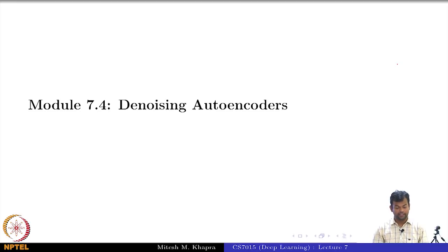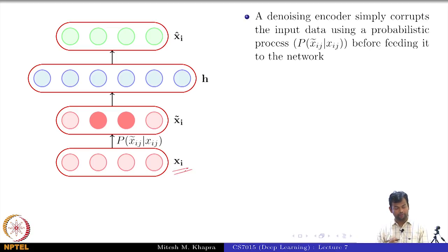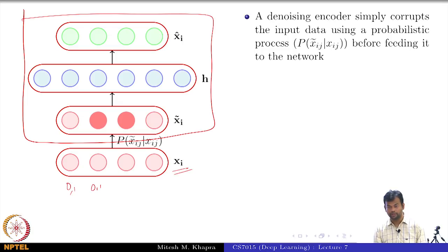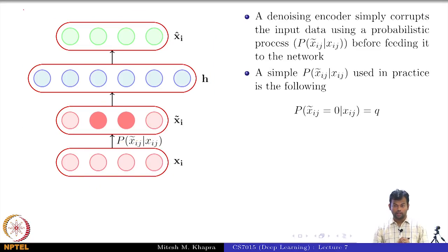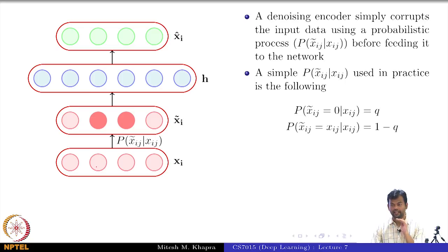We will now discuss denoising autoencoders. The idea is simple: you have your original input x_i. For now, consider the case where x_i values are binary inputs, so each can be 0 or 1. Before feeding this input to the autoencoder, I apply a corruption: with probability q, I set x_ij to 0, and with probability 1 minus q, I keep it as is. So with some probability q I am corrupting the data, otherwise retaining it, then feeding that corrupted data to the autoencoder.